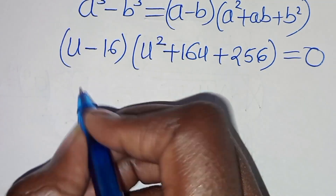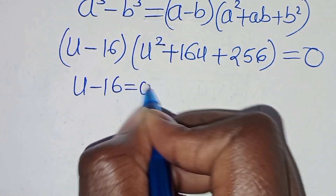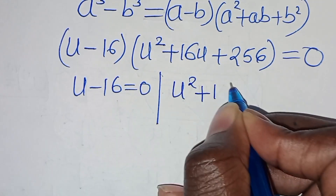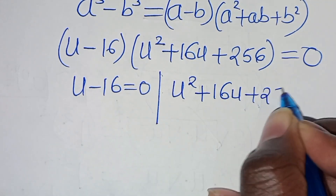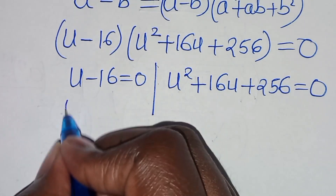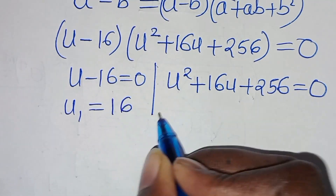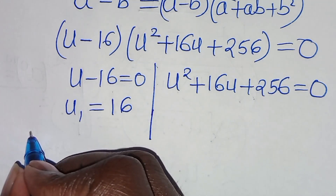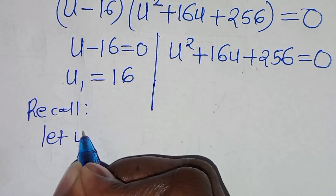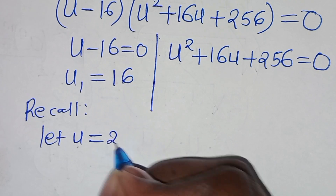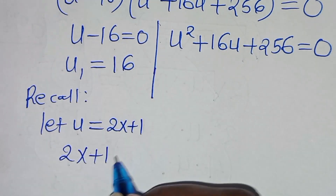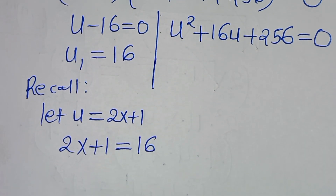So we have two parts here. The first part is u minus 16 equals 0. The second part is u to the power of 2 plus 16u plus 256 equals 0. From the first part, we have u1 equals 16. And if you recall, we assigned that let u be equal to 2x plus 1. So this implies that 2x plus 1 equals 16.